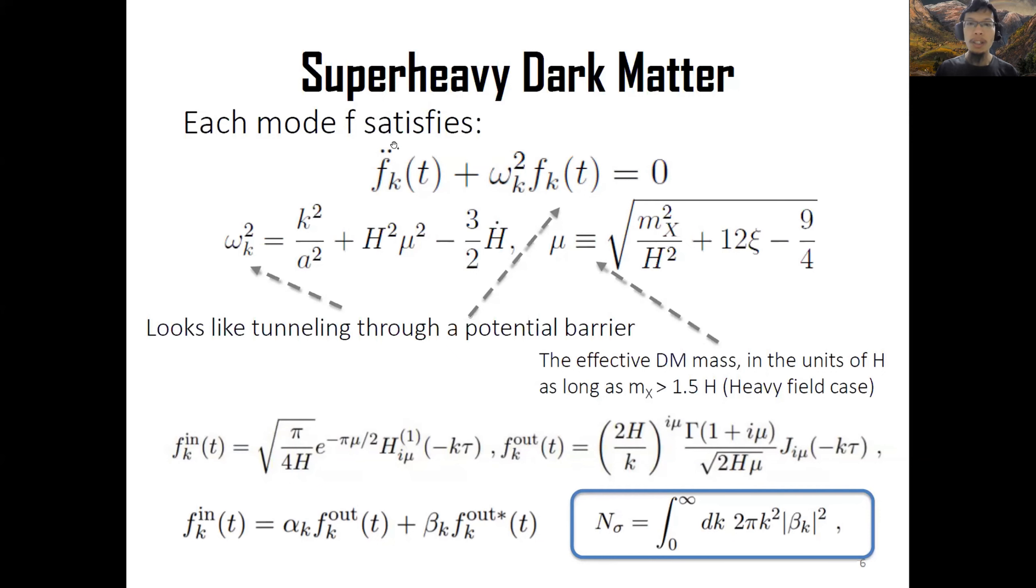Different K modes behave differently. The primary goal is to predict the amplitude of each K mode, or the coefficients of these K modes. If you look at the equation itself, it looks like the tunneling problem - you get through a potential barrier that's like this. It's a very complicated background cosmology. Anything that can penetrate through the barrier created at the end of inflation would be the dark matter. Here I introduce the effective dark matter mass.